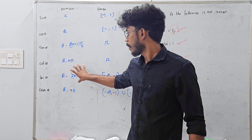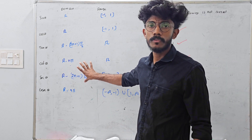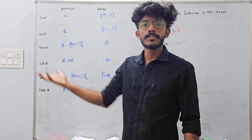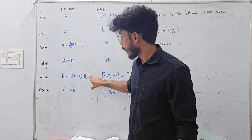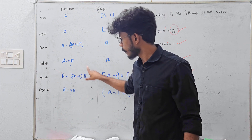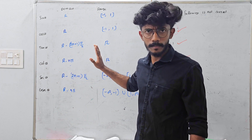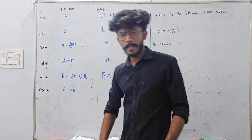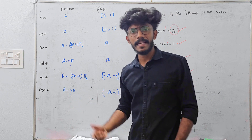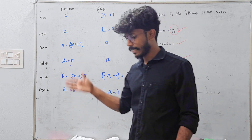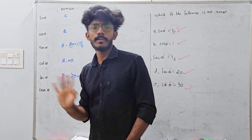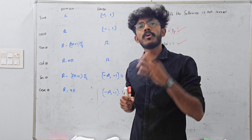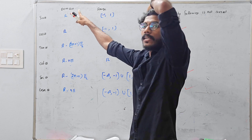Real number excluding odd multiples of pi by 2 — like pi by 2, 3 pi by 2, 5 pi by 2. Sec at pi by 2, sec at 3 pi by 2, sec at 5 pi by 2 — these values don't exist. The domain excludes 2n plus 1 multiples of pi by 2. The other values of pi exist in the domain. The range of sec is minus infinity to minus 1 union 1 to infinity.